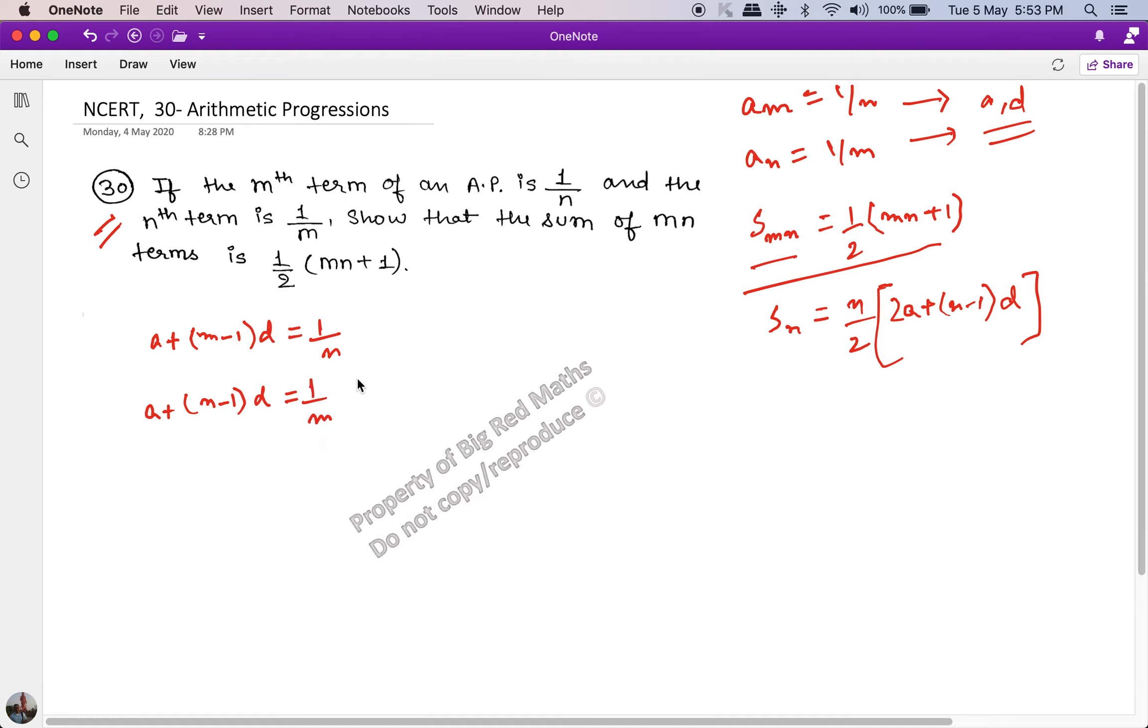And this condition says a plus (n minus 1) into d is equal to 1 upon m. This is our equation 1 and this is our equation 2. So if I subtract 1 minus 2, which is if I do 1 minus 2.